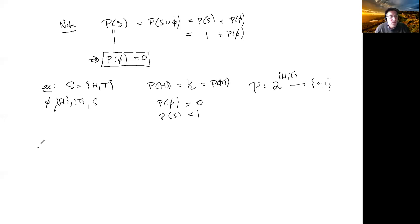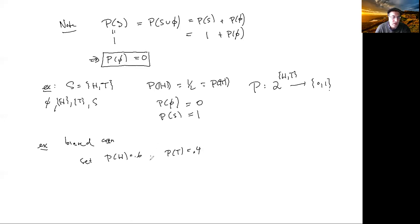By the way, if we want a biased coin instead of a fair coin, we could set P of H equal to 0.6 and P of T equal to 0.4. That's also a valid probability rule, but heads is more likely — it's going to occur 60% of the time.